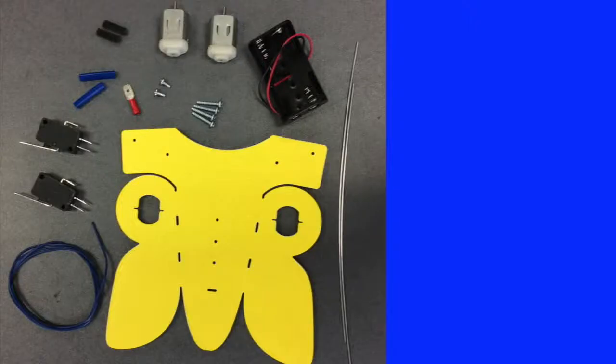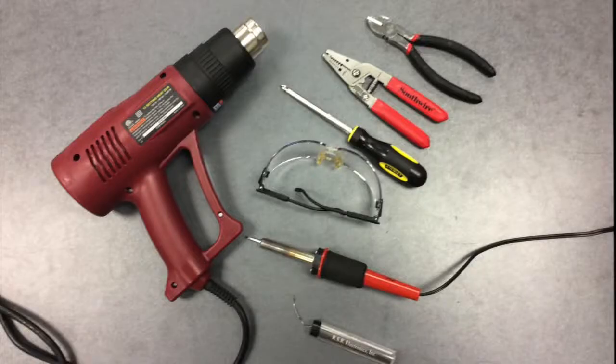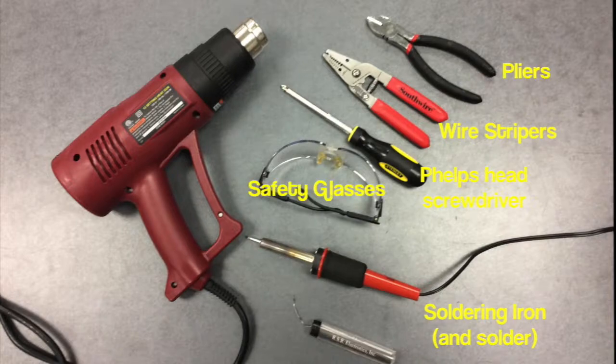Robotic Butterfly. Here are the items you will get in your robotic butterfly kit. Along with the kit, you will also need a soldering iron, a phillips head screwdriver, wire strippers, pliers, safety glasses, and a heat gun.